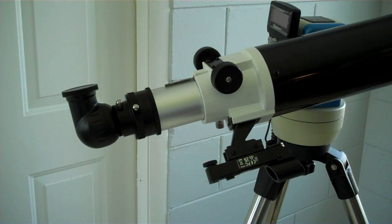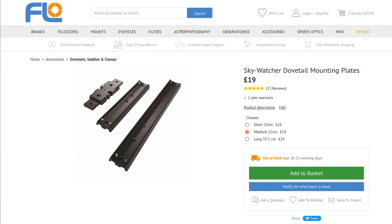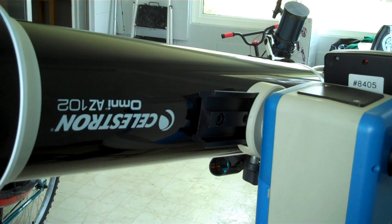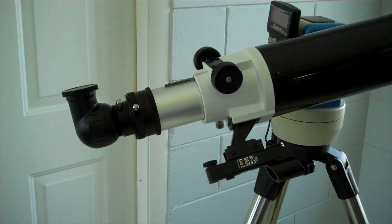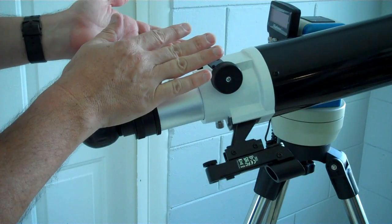Now the real solution is to buy a set of 4 inch rings and an 8 inch dovetail and put this scope on rings as opposed to the dovetail that's mounted just directly to the tube. However, that's going to cost at least 60 to 70 bucks. So in a temporary workaround, what I'm planning on doing is rotating the focuser assembly 180 degrees.